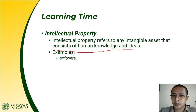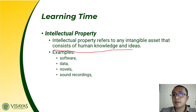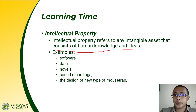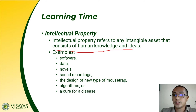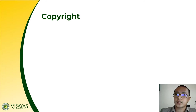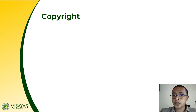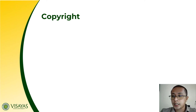Examples of intellectual property include software, data, novels, sound recordings, the design of a new mousetrap, and algorithms or cures for a disease. These are some examples of intangible assets which are protected under intellectual property rights, or what we call IPR.